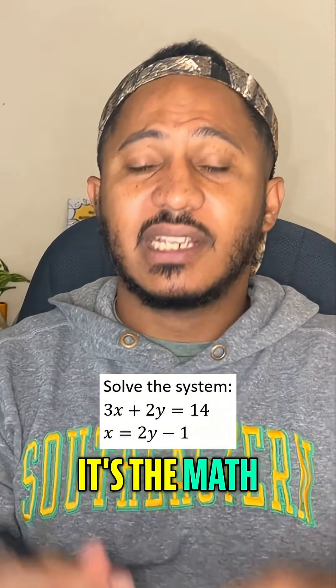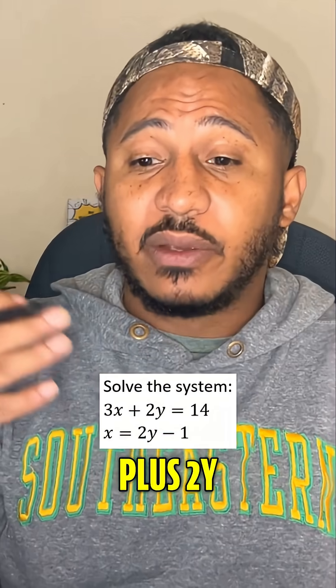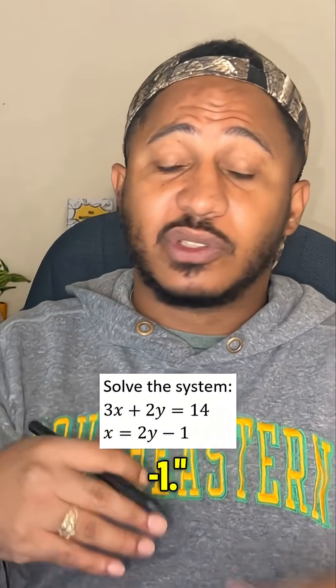SAT prep. Here we go. Here's the Math Guy Steve. Solve this system: 3x plus 2y equals 14, x equals 2y minus 1.